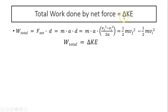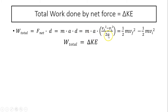Total work done by the net force equals the change in kinetic energy. Using the definition of work — force times distance — the total work equals net force times distance, which is m × a × d. Using the kinematic equation d = (vf² − vi²) / 2a, the a's cancel, giving: Total Work = ½mvf² − ½mvi². This is final kinetic energy minus initial kinetic energy — the change in KE.